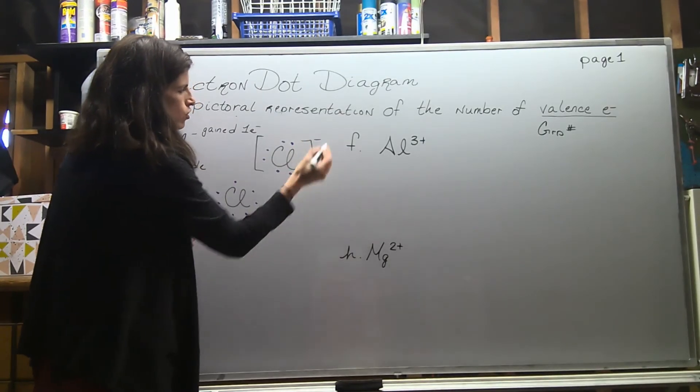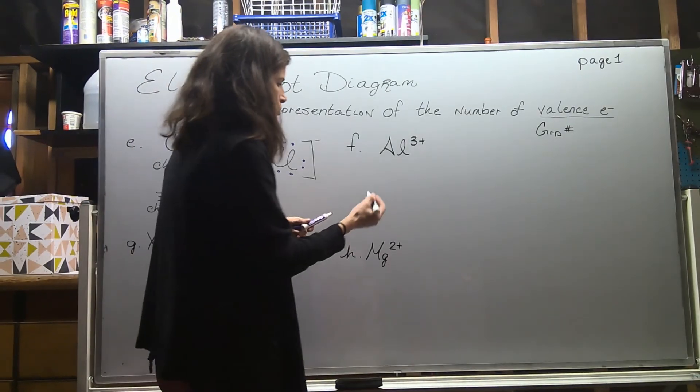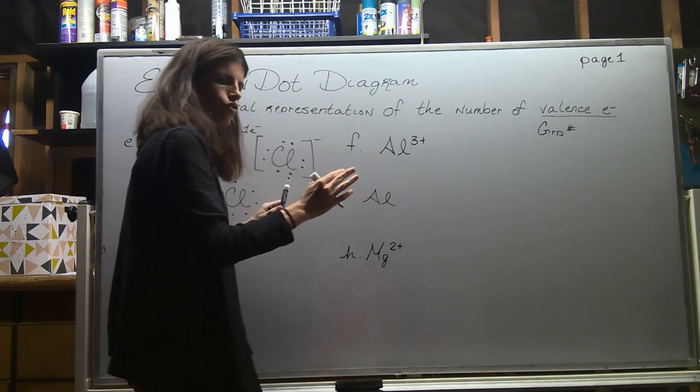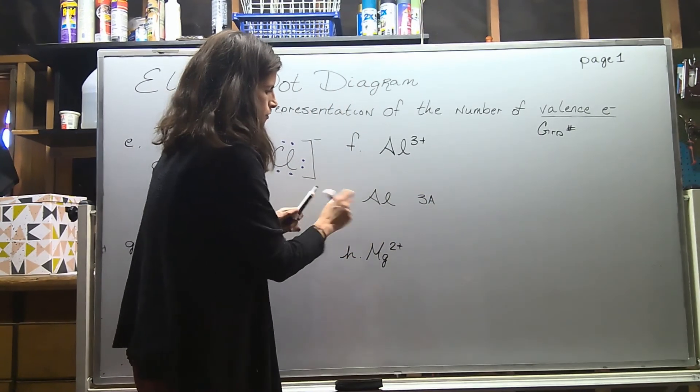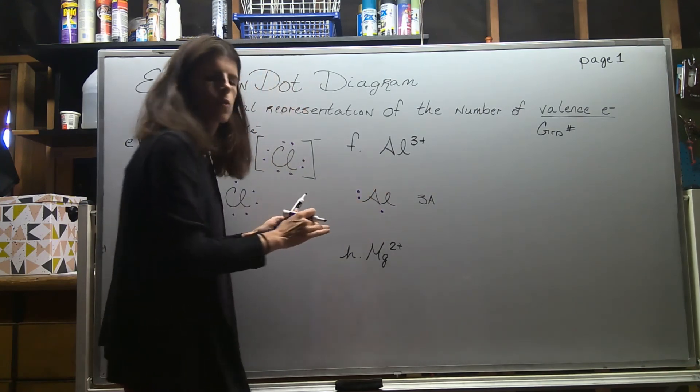More examples next. Let's look at aluminum. If it was neutral, it's in group 3A, so it would have three valence electrons. The neutral ones don't need the square brackets.